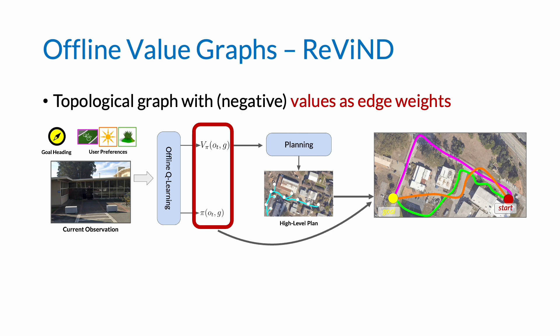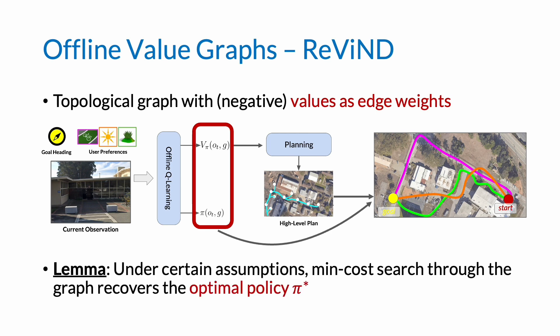In fact, under certain assumptions like full state coverage and operating in a deterministic MDP, it can be shown that finding the minimum cost path through this graph is indeed equivalent to following the optimal policy, pi star.